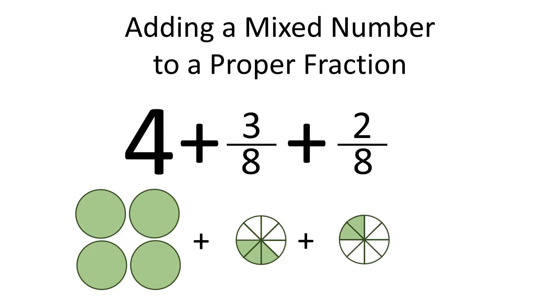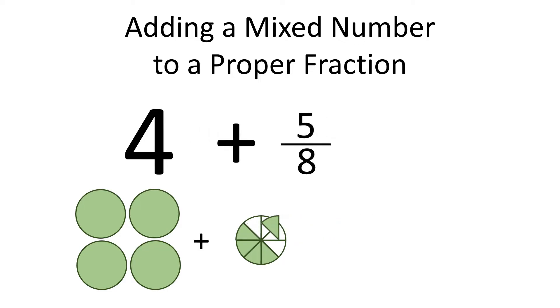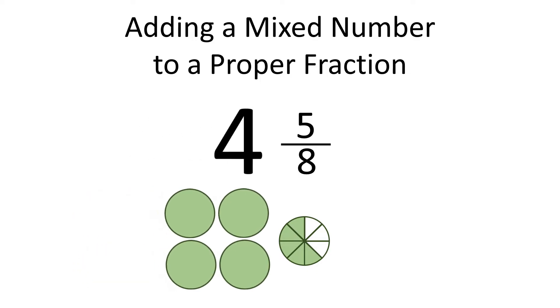And 3 eighths plus 2 eighths is 5 eighths. 4 plus 5 eighths is equal to 4 and 5 eighths.